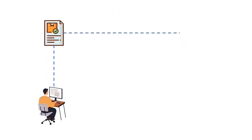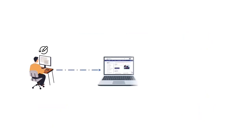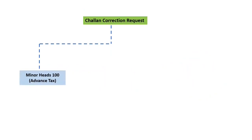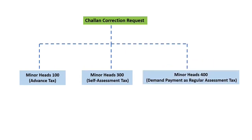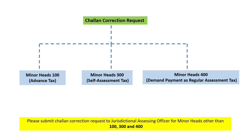The Chalan correction service is presently available for Chalans pertaining to assessment year 2021 onwards. For years prior to AY 2021, please approach the jurisdictional assessing officer. Also, the Chalan correction request will be allowed only once on the e-filing portal. The service is only available for minor heads 100 (advance tax), 300 (self-assessment tax), and 400 (regular assessment tax for demand payment) and their corresponding major heads.